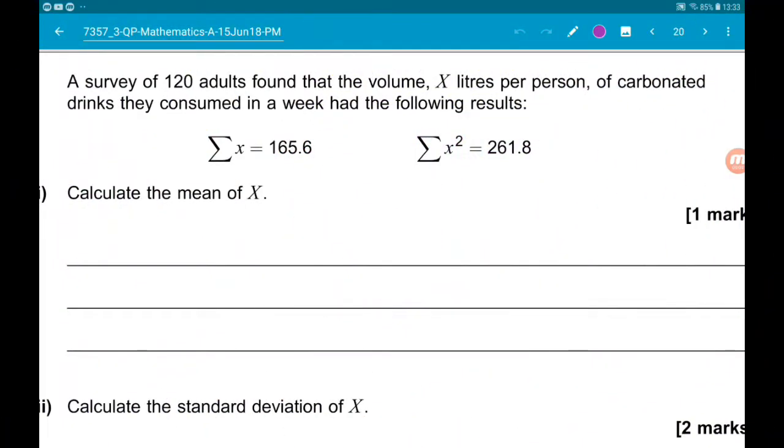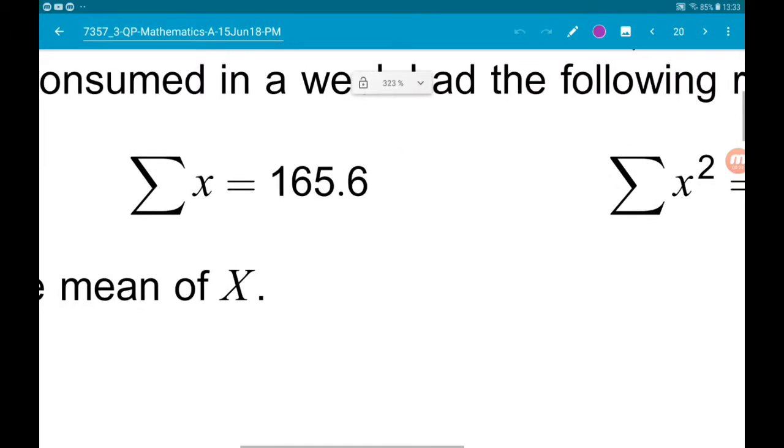We've got a big one here. A survey of 120 adults found that the volume X liters per person of carbonated drinks they consumed in a week had the following results: sigma X is 165.6, sigma X squared is 261.8.